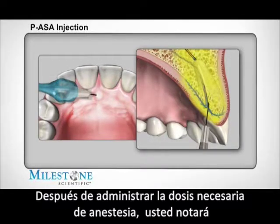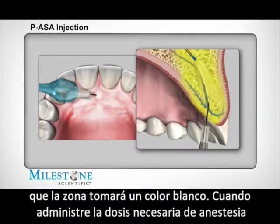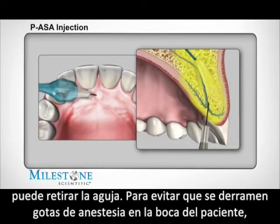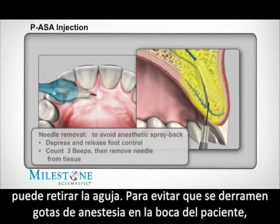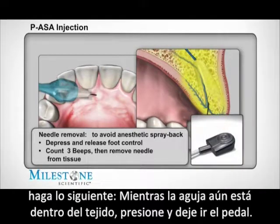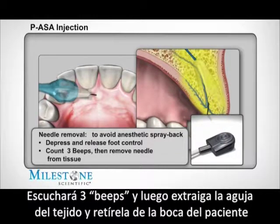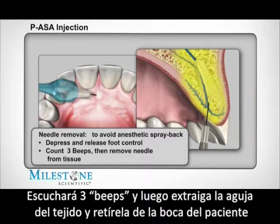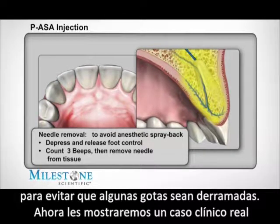After you've delivered the proper amount of anesthetic, you will notice diffuse blanching of the tissue. Once the suggested volume of anesthetic solution is dispensed, the needle can be removed. To avoid anesthetic spray back during needle removal, use the following technique: while the needle is still embedded in the patient's tissues, depress and release the foot control pedal, count three beeps after releasing the foot control, and then totally remove the needle from the patient's mouth. Direct the needle away from the patient as a small amount of anesthetic solution may still be present.